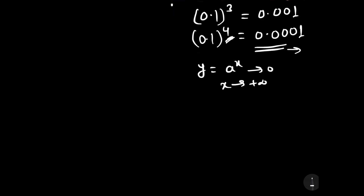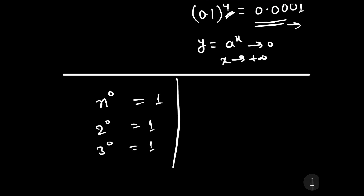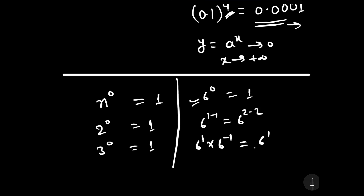This is our first concept. The second concept we will use is that any number to the power 0 is equal to 1. For example, 2 to the power 0 is 1, 3 to the power 0 is 1, and 6 to the power 0 is also 1. To prove this: 6 to the power 1 minus 1 equals 6 to the power 1 times 6 to the power minus 1, which is 6 divided by 6, which cancels to give 1.